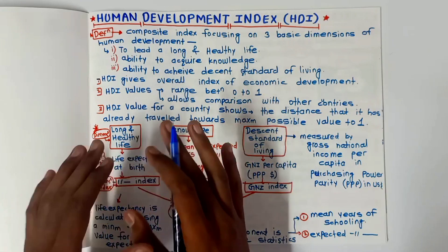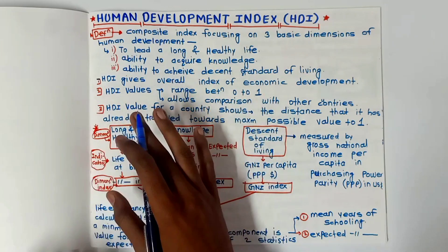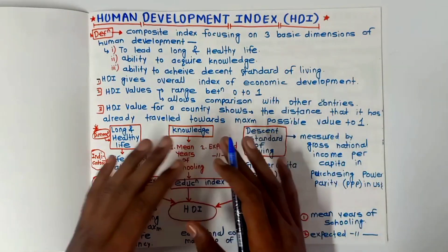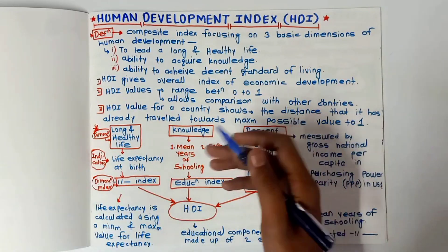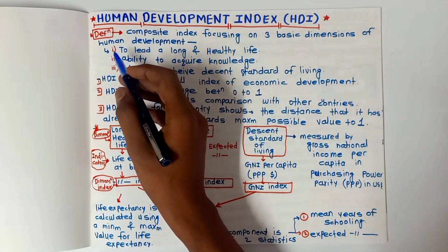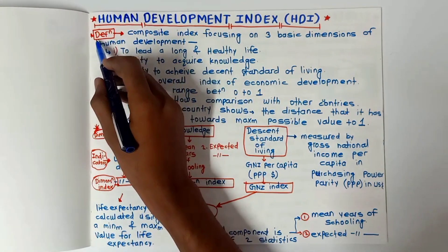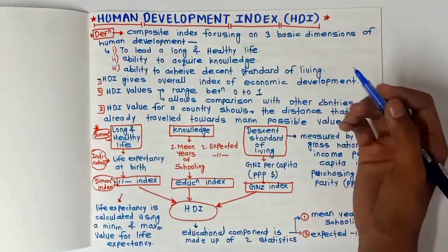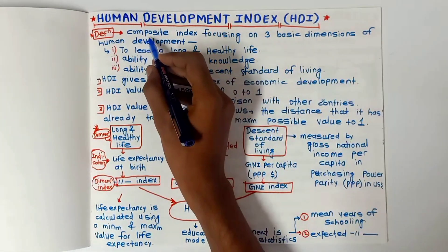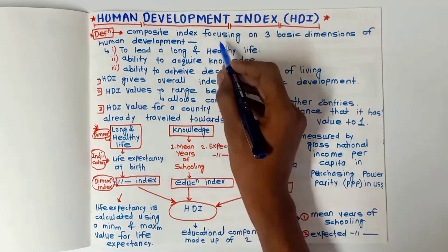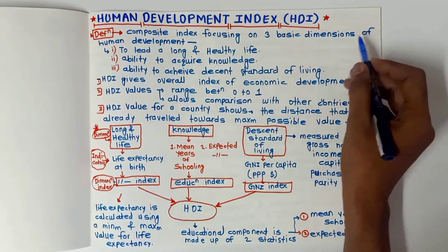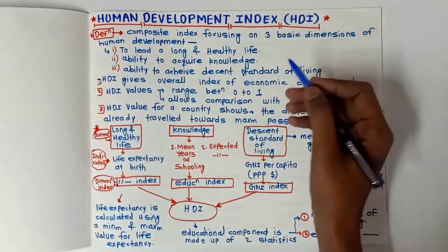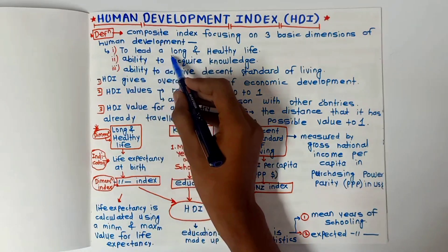I have covered all the points which are important for writing answers in your exams, so you don't need to read again from the book after watching this video. Let's start. First of all, the definition — what is the Human Development Index? It is a composite index focusing on three basic dimensions of human development.